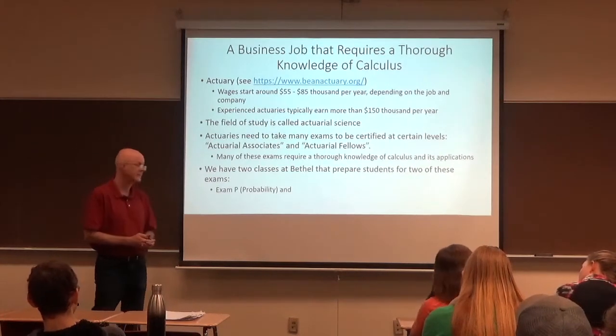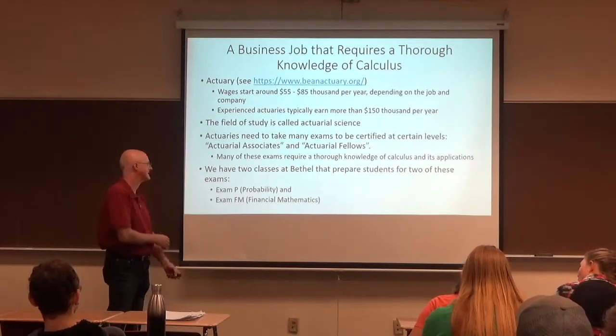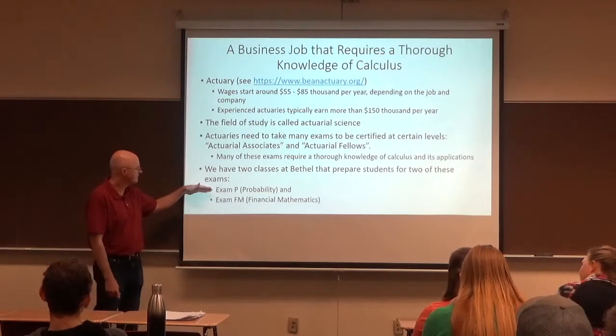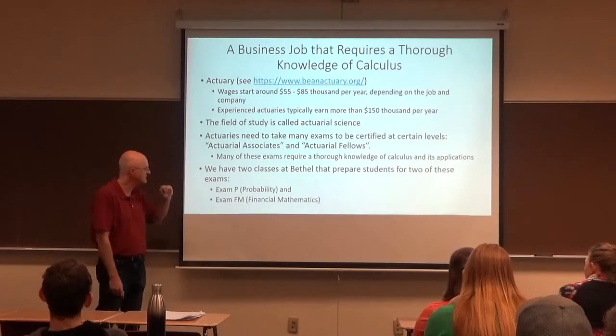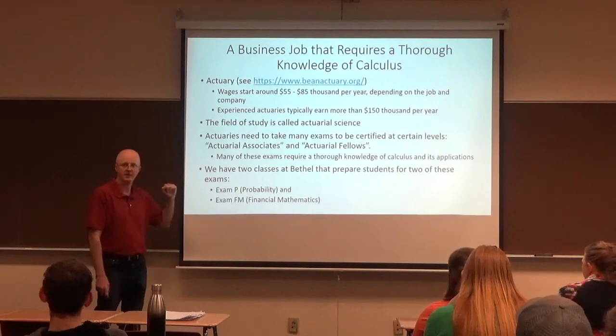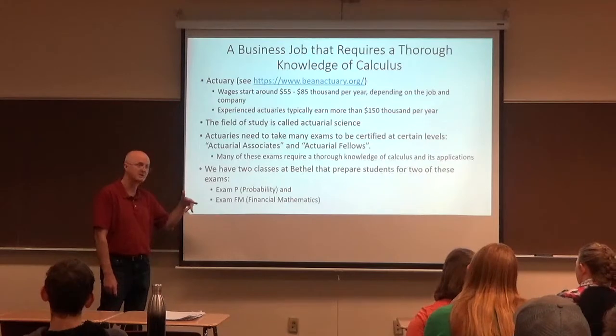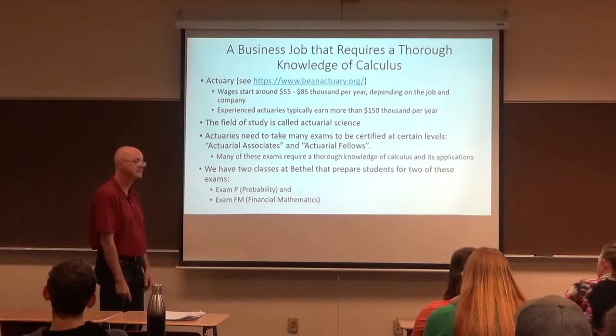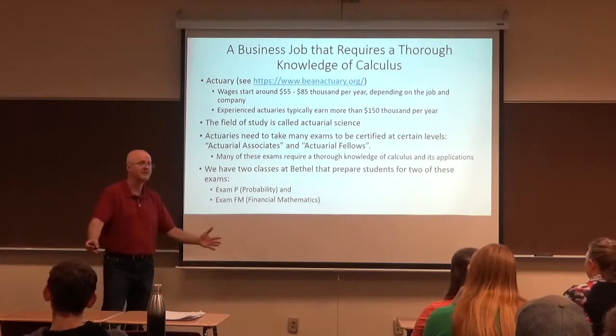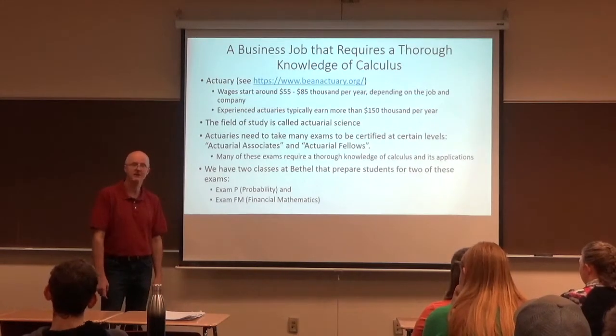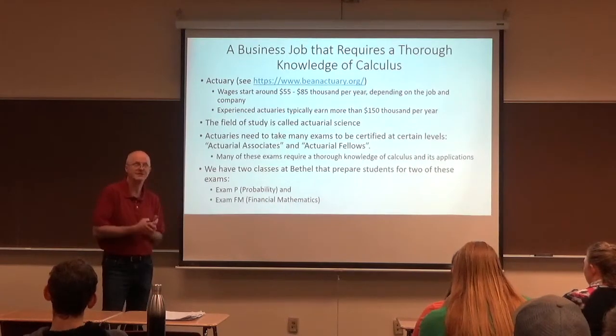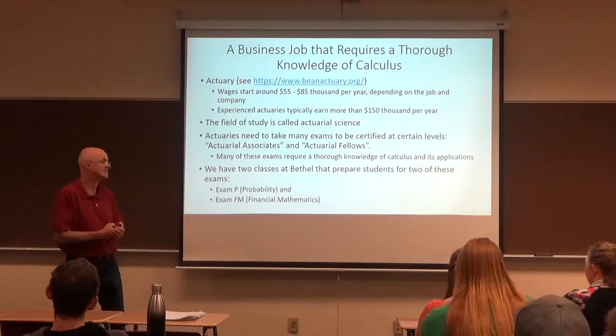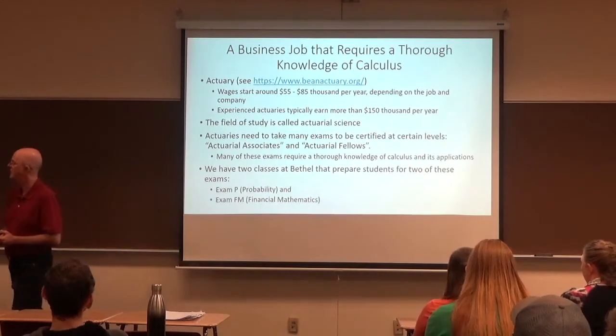The field of study is called actuarial science, and some schools have majors in actuarial science. We are thinking about making one here at Dalton. We do have a couple classes that help people study for actuarial science. Actuaries need to take many exams to be certified at certain levels. Actuarial associates and actuarial fellows are the levels of certification. Many of these exams require a thorough knowledge of calculus and its applications. We have two classes beyond calculus that prepare students for two of these exams. Something called exam P on probability, calculus based, and exam FM on financial math. We have offered probability every fall for the past 30 or 40 years. We just recently started offering financial math. It has been a summer course since 2017, and this fall is being taught by a working actuary named Jake Smith for the first time. So I know many of you are science engineering majors. If you decide you're not interested in science and engineering here in the next year or so, but you still like to use your math skills, you can think about being an actuary. I'm somebody you can talk to.